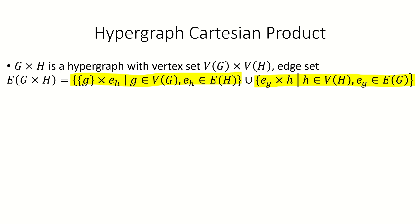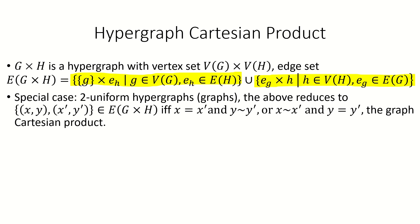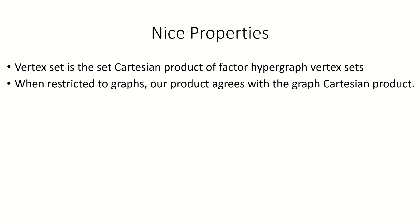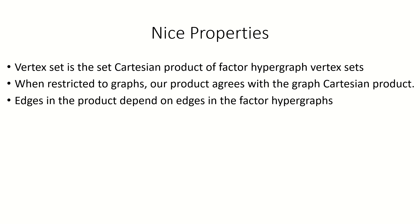Do you see how this generalizes the Cartesian product of graphs? If we consider graphs to be two-uniform hypergraphs, then the hypergraph Cartesian product of two graphs has the same vertex set as the graph Cartesian product of those graphs. And since all edges have size 2, any set of vertices that forms an edge is actually an adjacent pair of vertices, meaning that our edge rule is equivalent to that for the graph Cartesian product. So far, the hypergraph Cartesian product satisfies a couple of nice properties: the vertex set is the Cartesian product of the factor hypergraph vertex sets, the hypergraph Cartesian product of two graphs is the same as the graph Cartesian product of those two graphs, and the edges of the product depend on the edges of both factors.